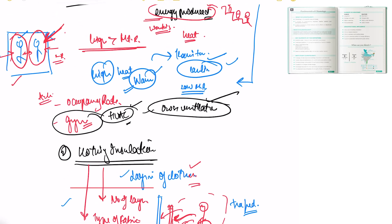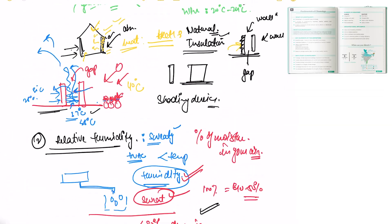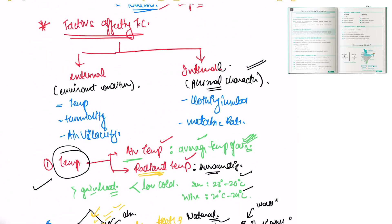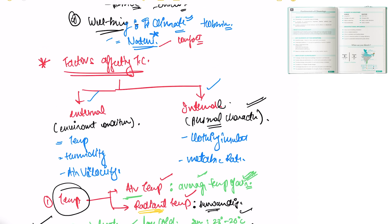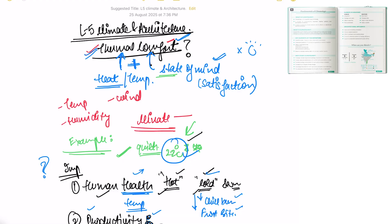So these were all the factors. Clothing insulation, metabolism rate, air velocity, relative humidity and temperature. Both internal and external factors determine the proper amount of thermal comfort for a human being inside a building. Thank you. Now in the next lecture we will study about human heat balance, how the heat production, the heat transmission works on a human body. Thank you.